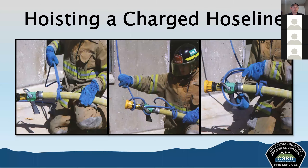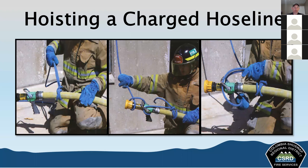For hoisting a charged hose line, the big concern is not letting the bale open and accidentally discharge water. Tie a clove hitch with a safety knot around the hose, then tie a half hitch around the nozzle. Pass the bight through the nozzle bale and loop it back over the nozzle so the rope holds the nozzle shut while being hoisted. The rope comes back over the bale and keeps it from opening up accidentally. Hoist the hose line nozzle end up, and use the hose itself as the tagline.